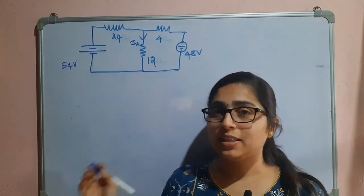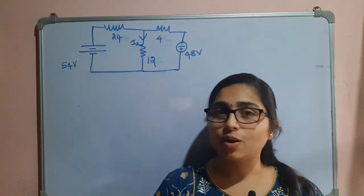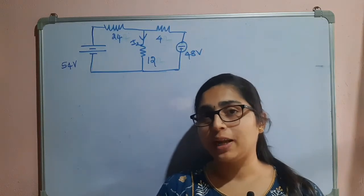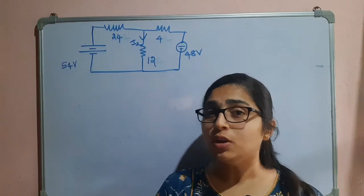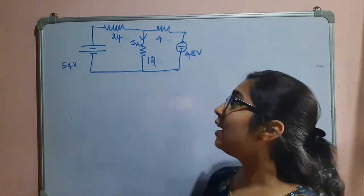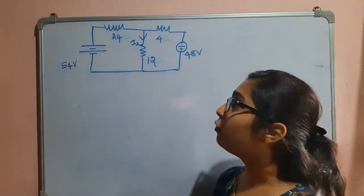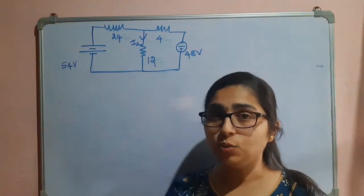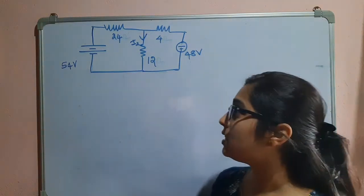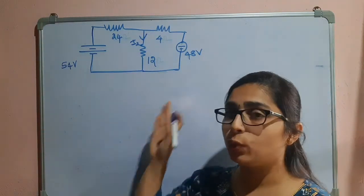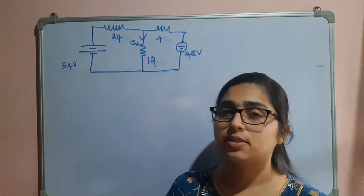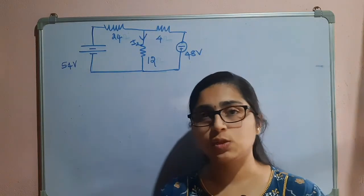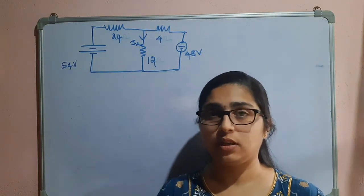Hello everyone. In this video let us solve example 9.2. Here they are asking to find I2, that is the current flowing through the 12 ohm resistor, using the superposition theorem.